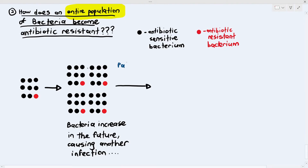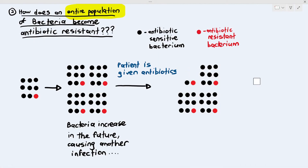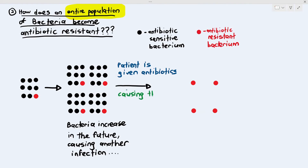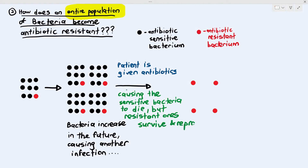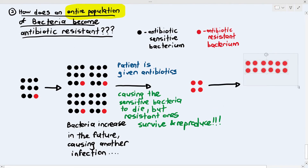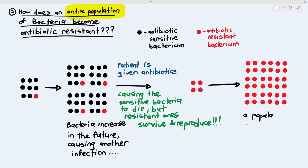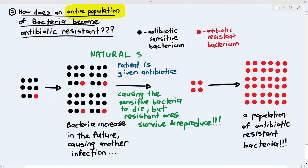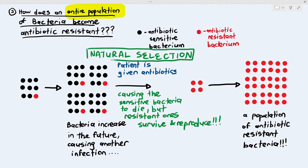The patient goes back to the hospital and is given another course of antibiotics. But not all bacteria will die: the sensitive ones (black) will die, but the resistant ones (red) will survive because they are resistant — they have an advantage to survive. Those that survive will reproduce, and a population of resistant bacteria builds up in the patient.